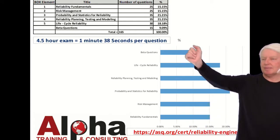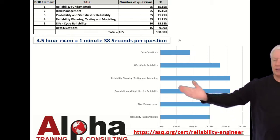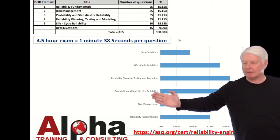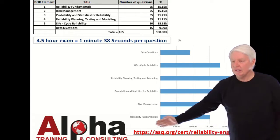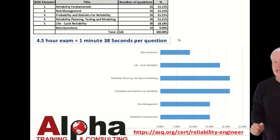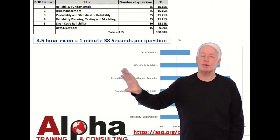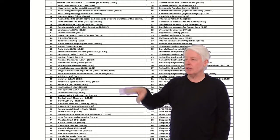Now this bar chart tells you the same thing as that table, just a little more graphical. The big hitter here is reliability planning and testing and modeling. It's also one of the more challenging elements of the body of knowledge. Notice I've also given you a link to the ASQ website in case you want to look at this information.